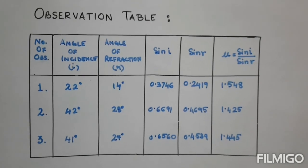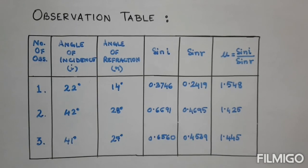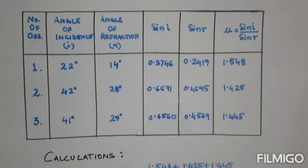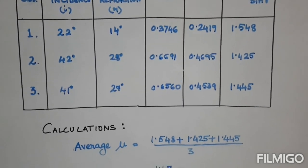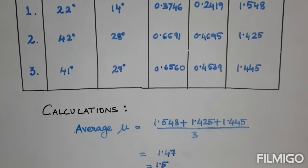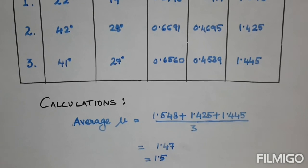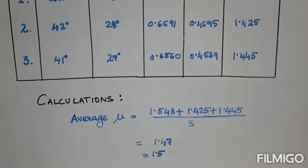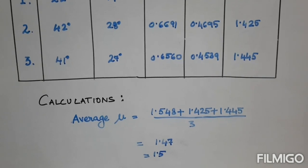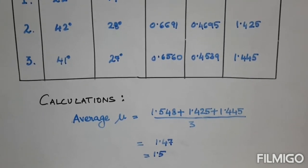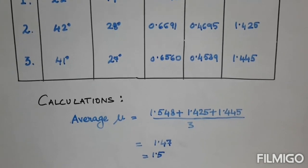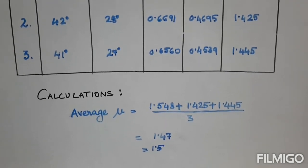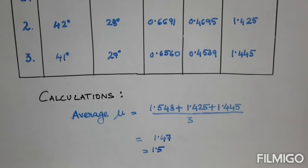We write all the data in an observation table as shown and then we calculate the average mu. Here we get 1.47, that is almost equal to 1.5. Hence it is verified that the refractive index of air-glass interface is 1.5.